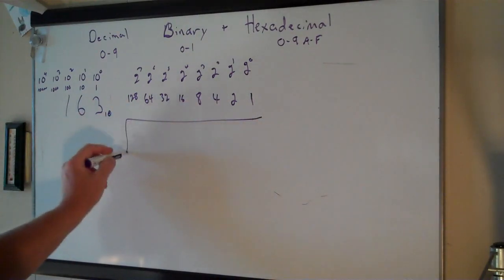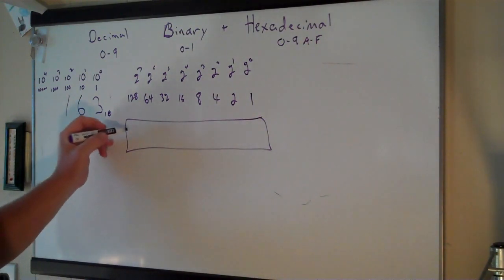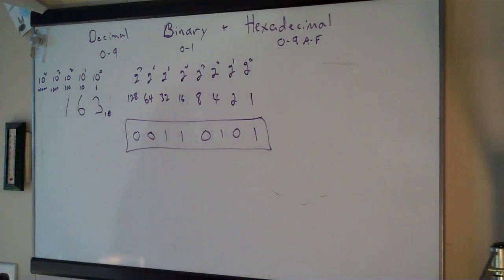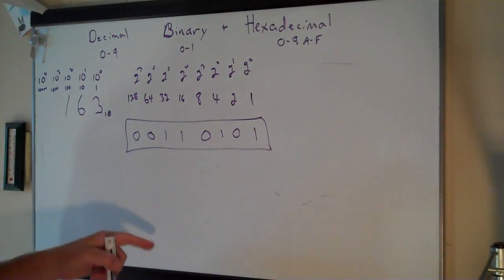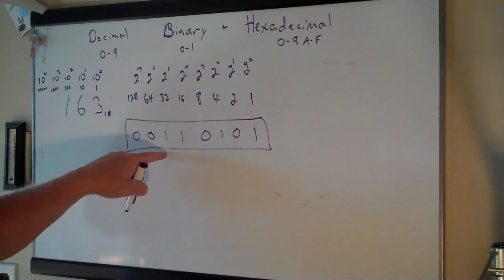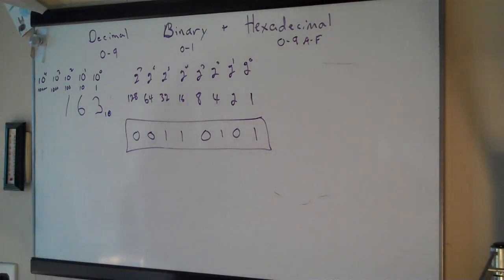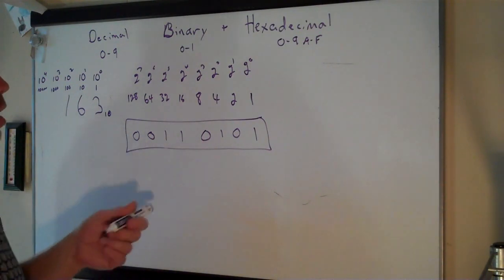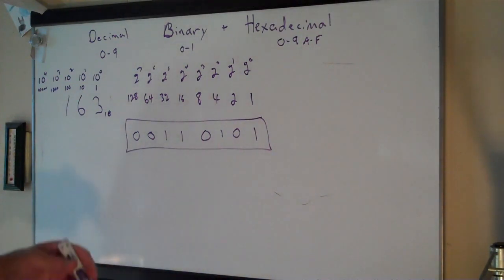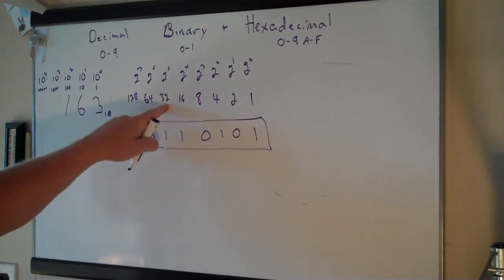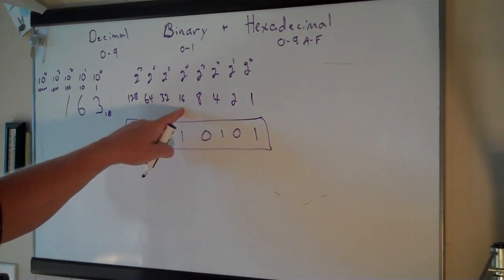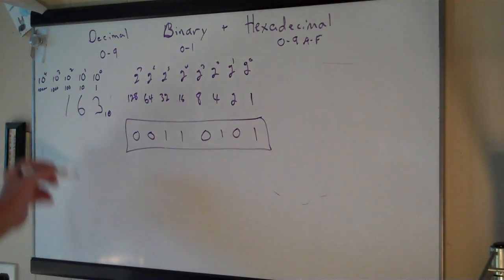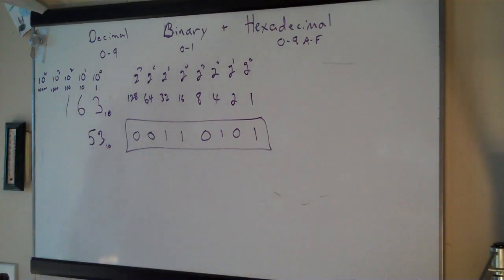If you have an 8-bit value like 00110101, to find out how much this is, you just add up the bits that have 1s — the ones that are turned on. In binary, a 1 is on or true, and a 0 is off or false. So this would be 32 plus 16 is 48, plus 4 is 52, plus 1 is 53. This would be 53 in base 10.